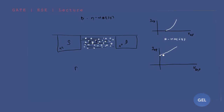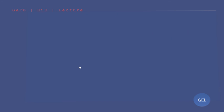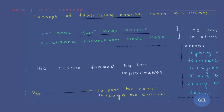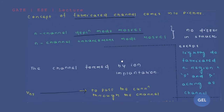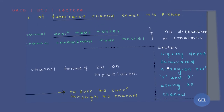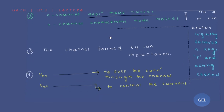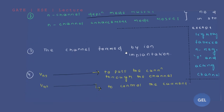In this video lecture we have six different points, all of which are very important. The first point: except for the lightly doped fabricated n-region between source and drain which acts as a channel, this is the only difference between D-MOSFET and E-MOSFET. The second point: the channel is formed by ion implantation — the technique by which we create a channel without any application of VGS.